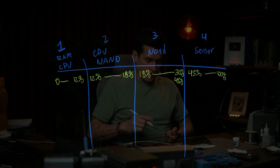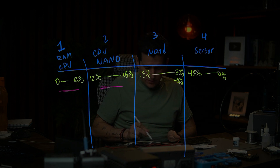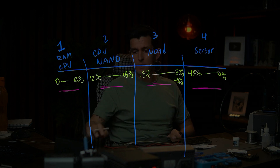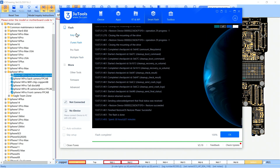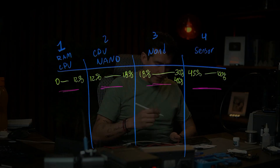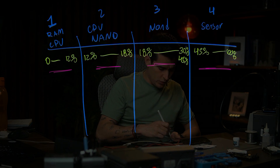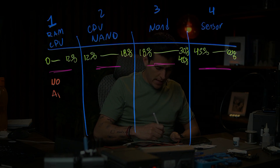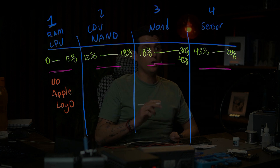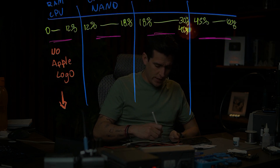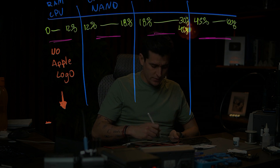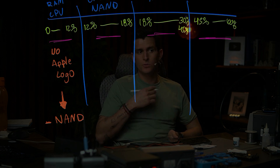If you get any error in the first stage — the 0–2% area — you're not going to have an Apple logo. So the first thing to check is: remove the NAND, because sometimes the NAND can have a conflict with the CPU. Restore without the NAND. If you see the Apple logo, it's a NAND problem.